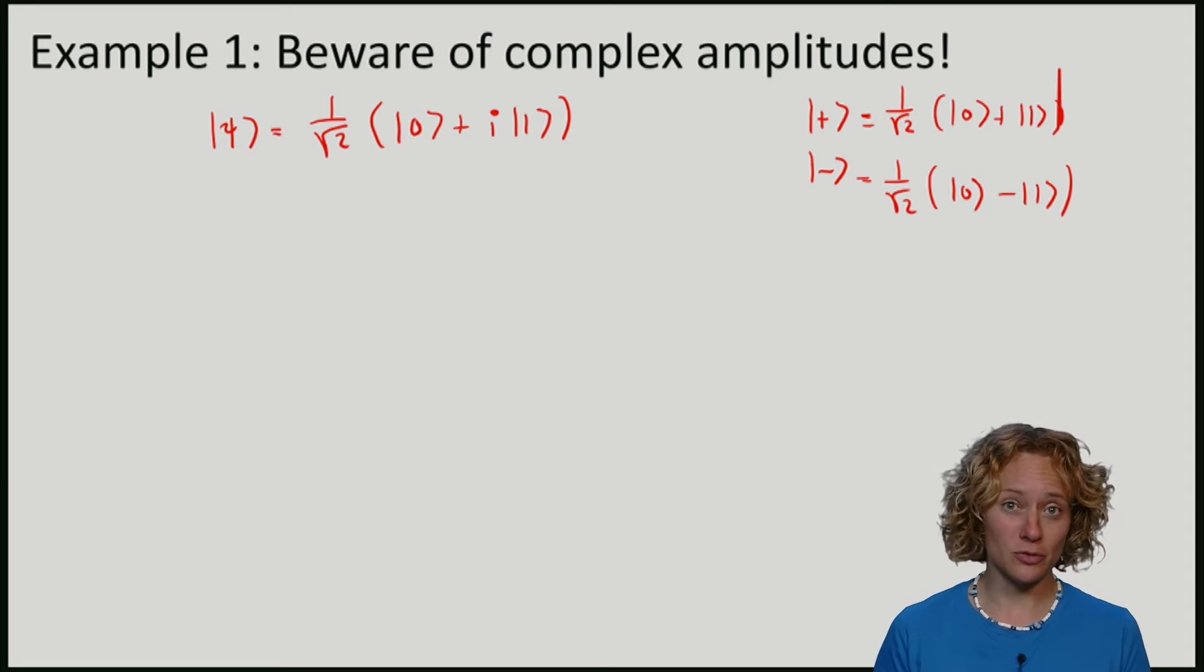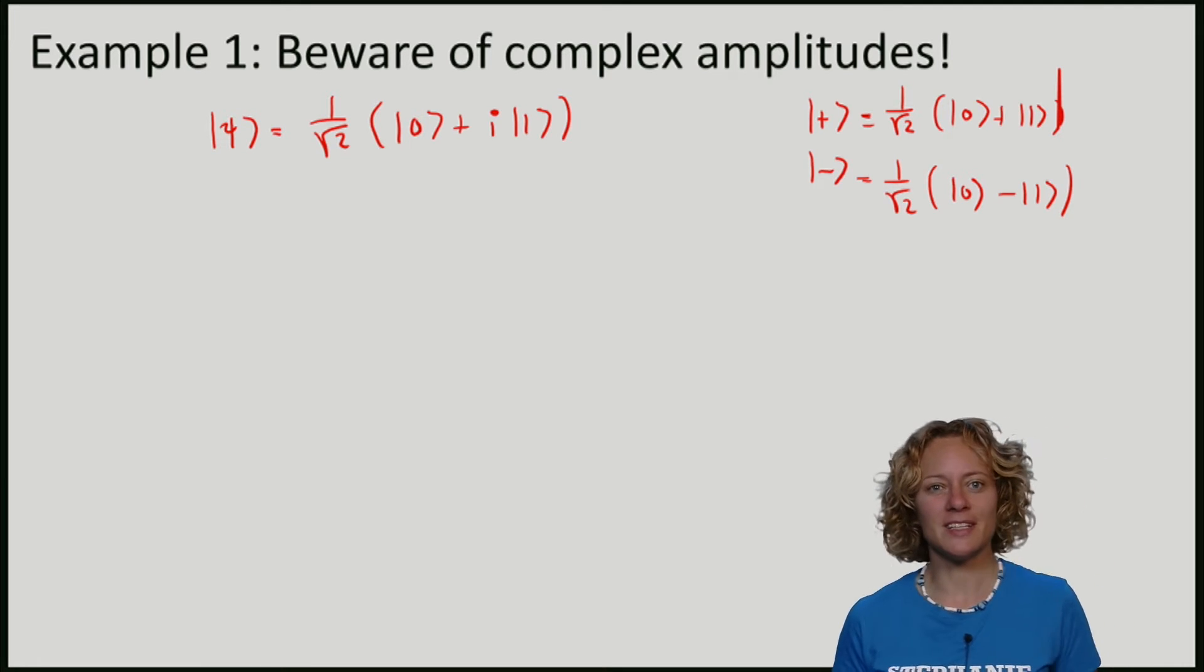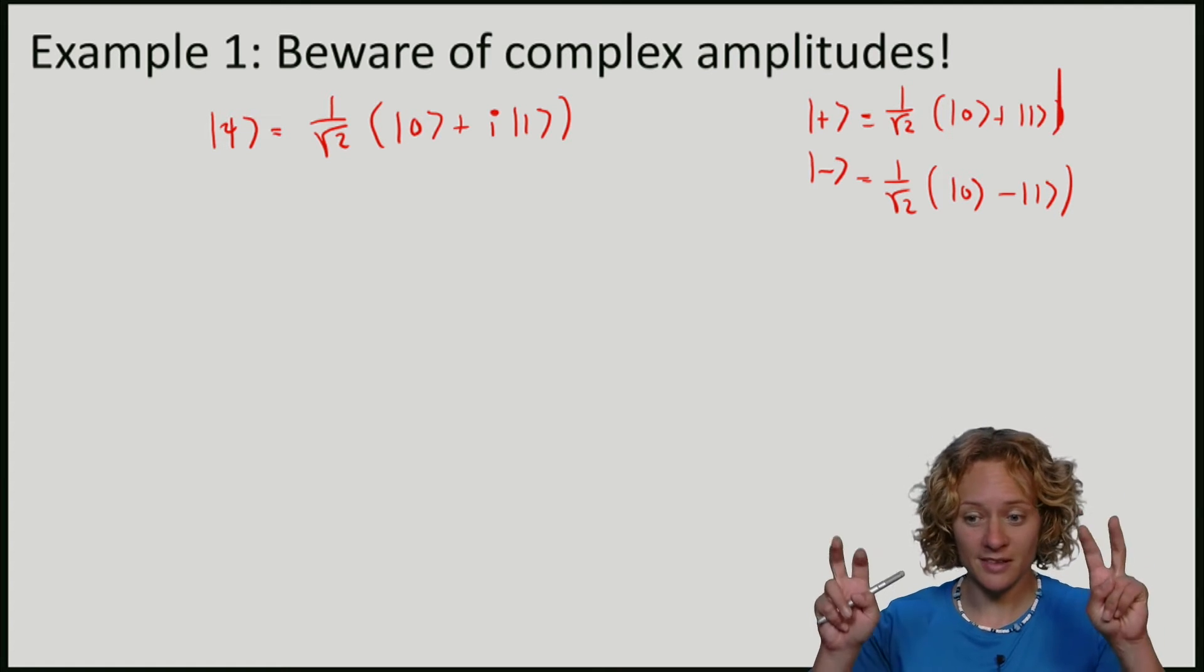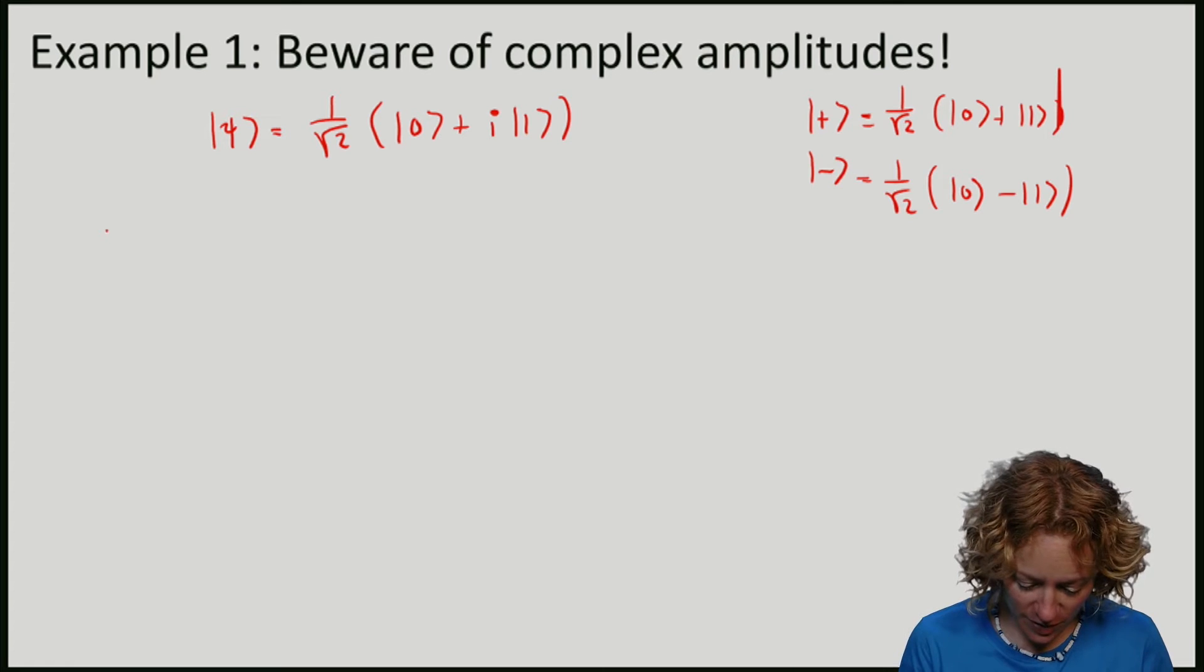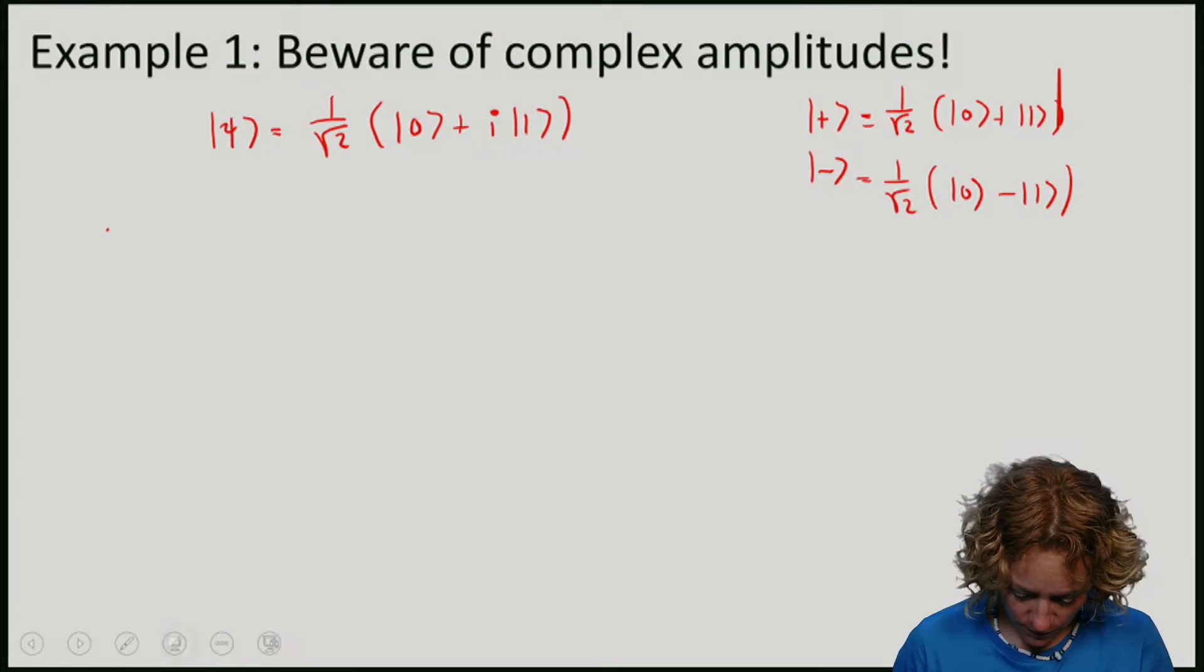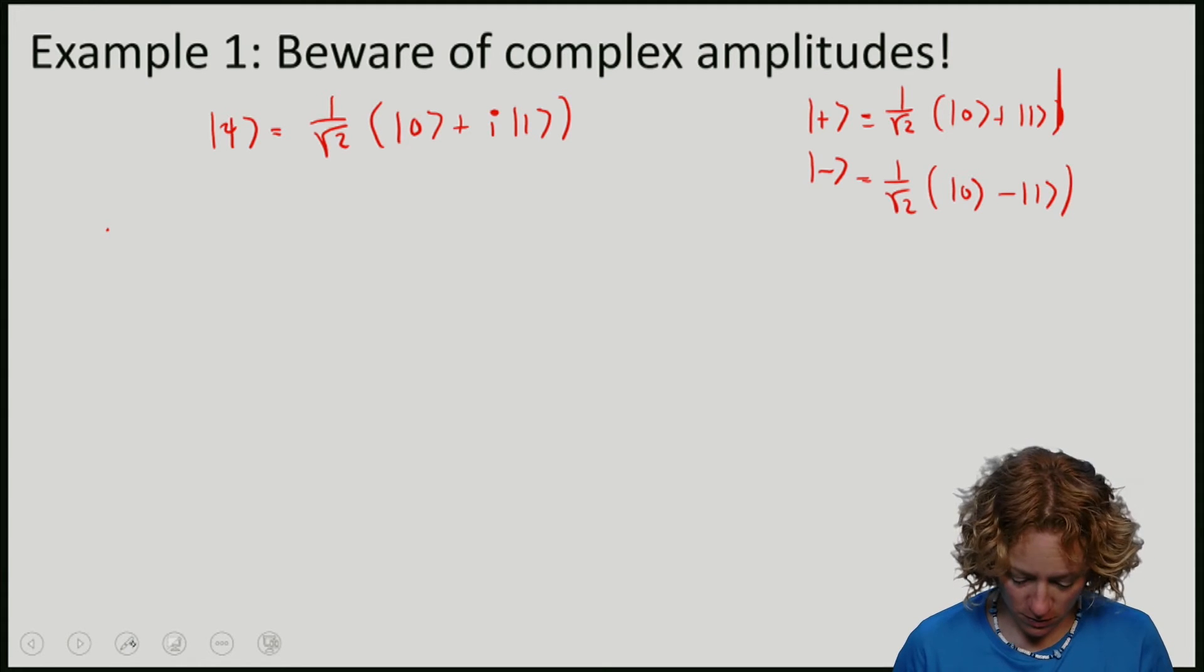Now we know by our rule that the probability of obtaining outcome plus, so again we'll identify outcomes with the basis elements, can be found by computing the inner product between Psi and plus.